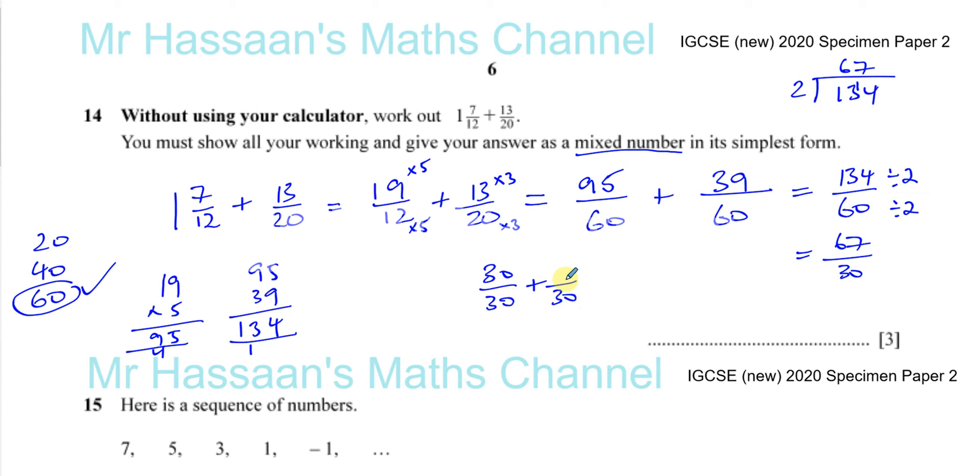You've got 60/30, so the easiest way is to say 30 goes into 67 two times remainder 7. So 2 and 7/30 is the answer. You've got two sets of 30, which is 60/30, and what's left over is 7/30.